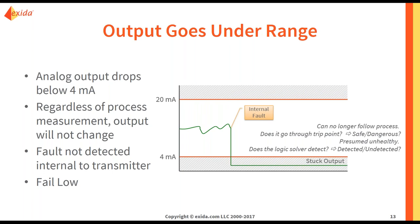Now let's say your output goes under range — it drops to below 4 milliamps. Regardless of the process measurement, the output will not change, so it is no longer following your process. The fault is not detected internal to the transmitter in this case. This is what we call a fail low. Again, we don't know if it is safe, dangerous, detected, or undetected yet. But we do know it can no longer respond to a hazardous scenario.